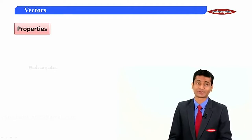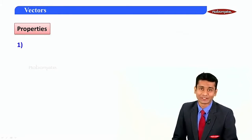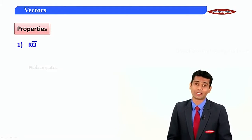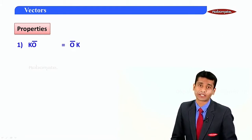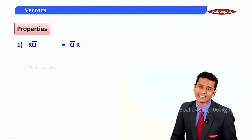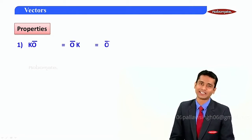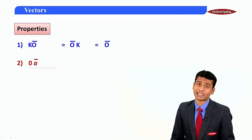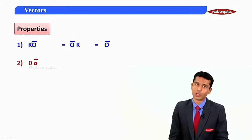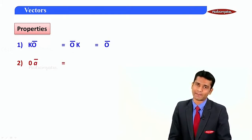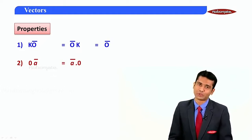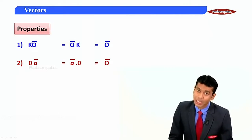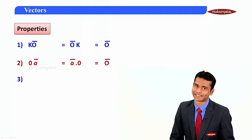The first property says that if you multiply any scalar to the null vector, or the null vector multiplied by any scalar, your resultant is the null vector. The second property says you multiply the number zero to any vector a-bar, or a-bar multiplied by zero, your resultant is a null vector.